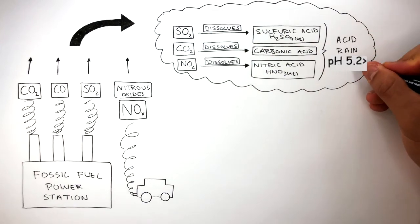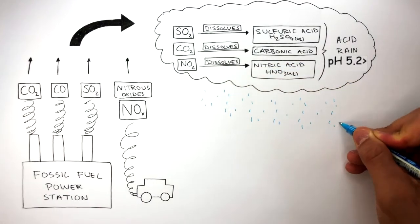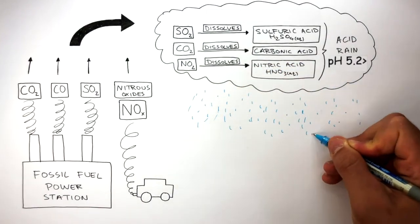And acid rain has a pH of 5.2 and below. So when it rains, there are acids dissolved in that rain, which is why we call it acid rain.